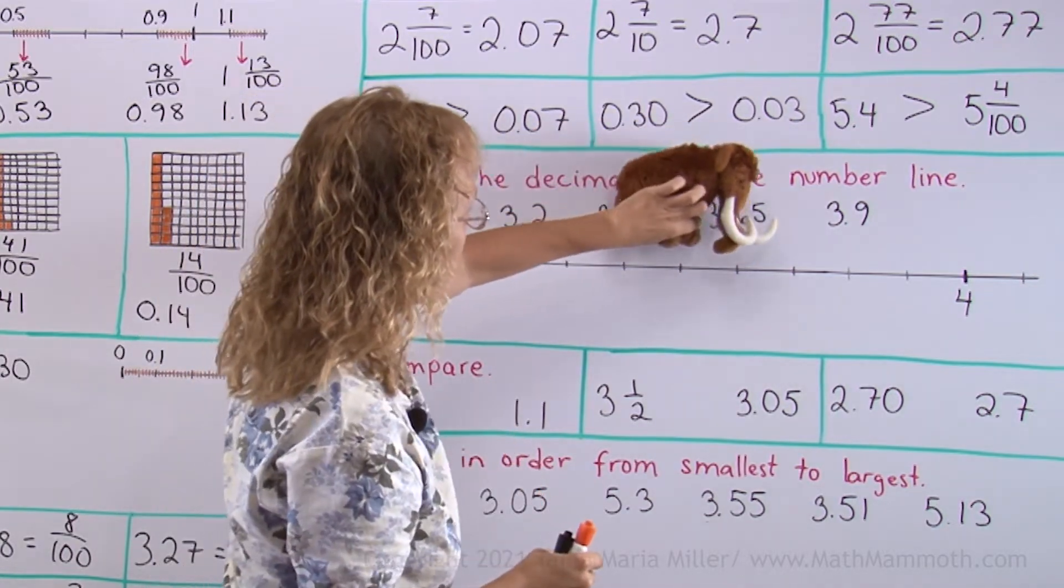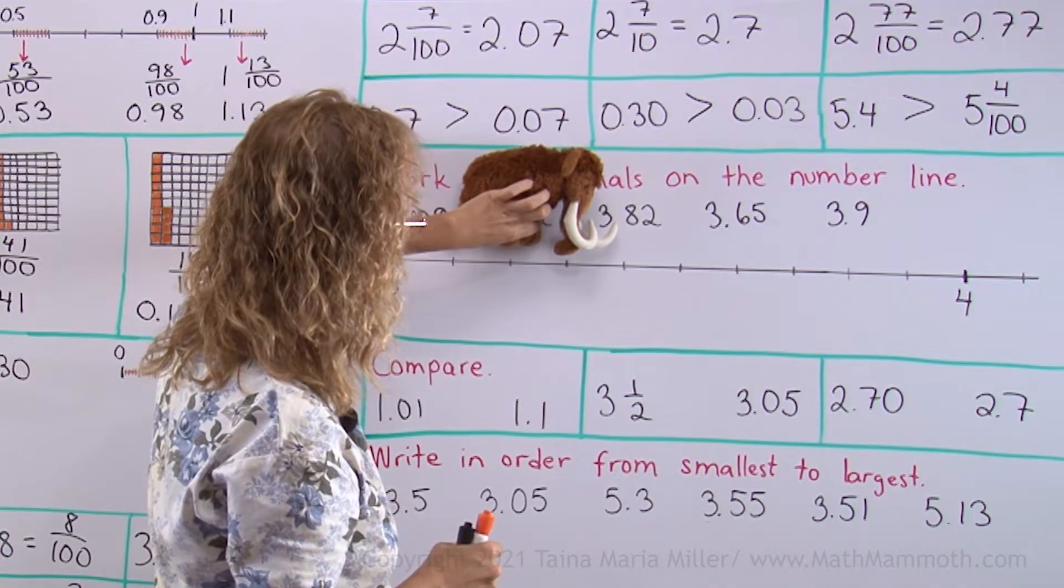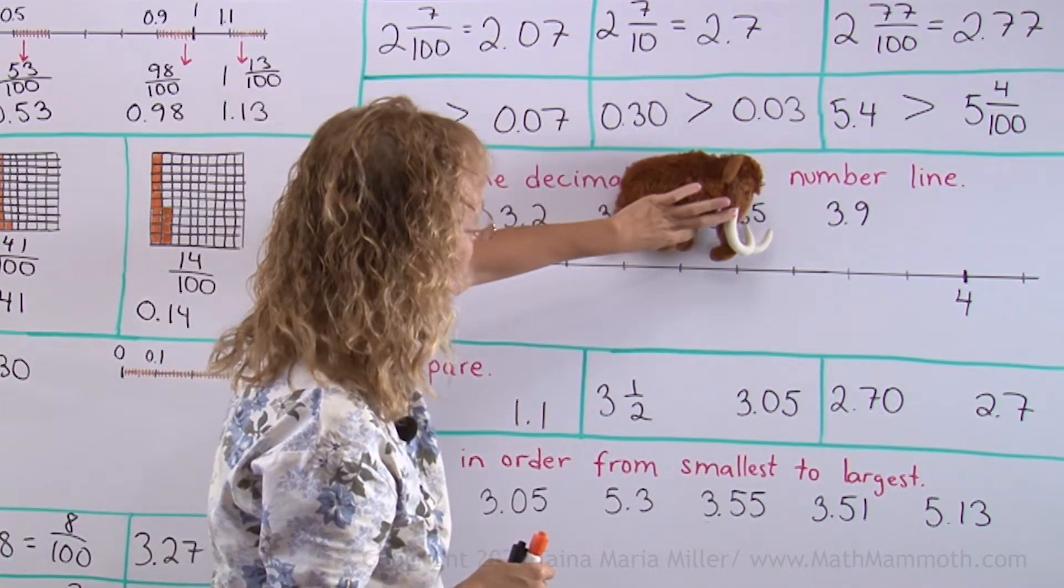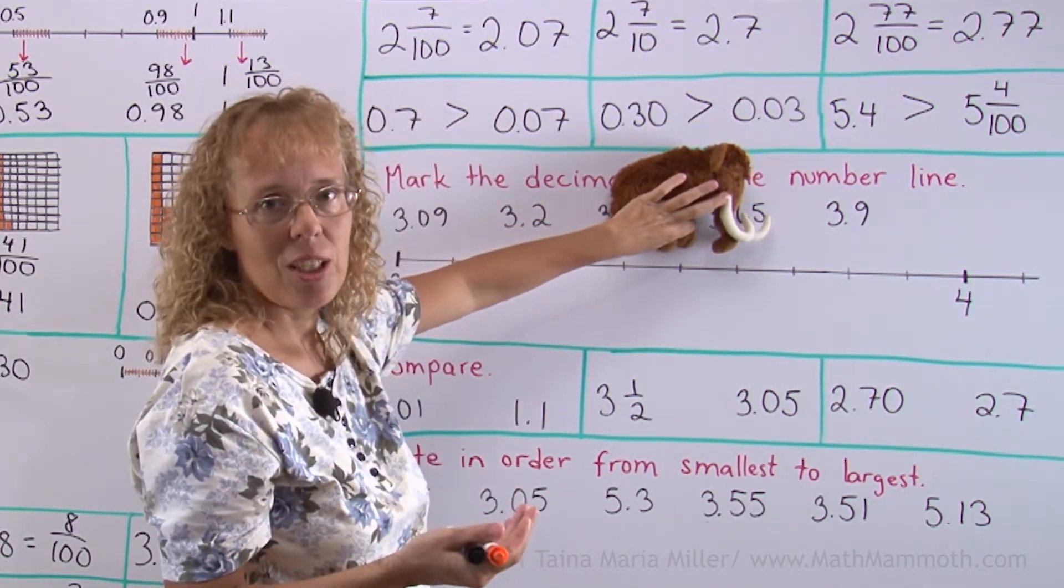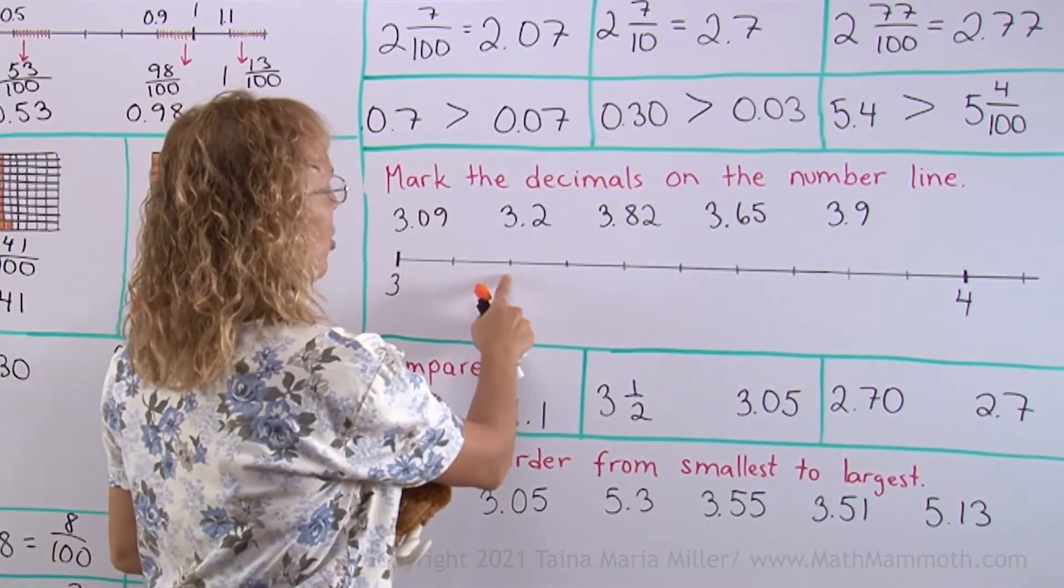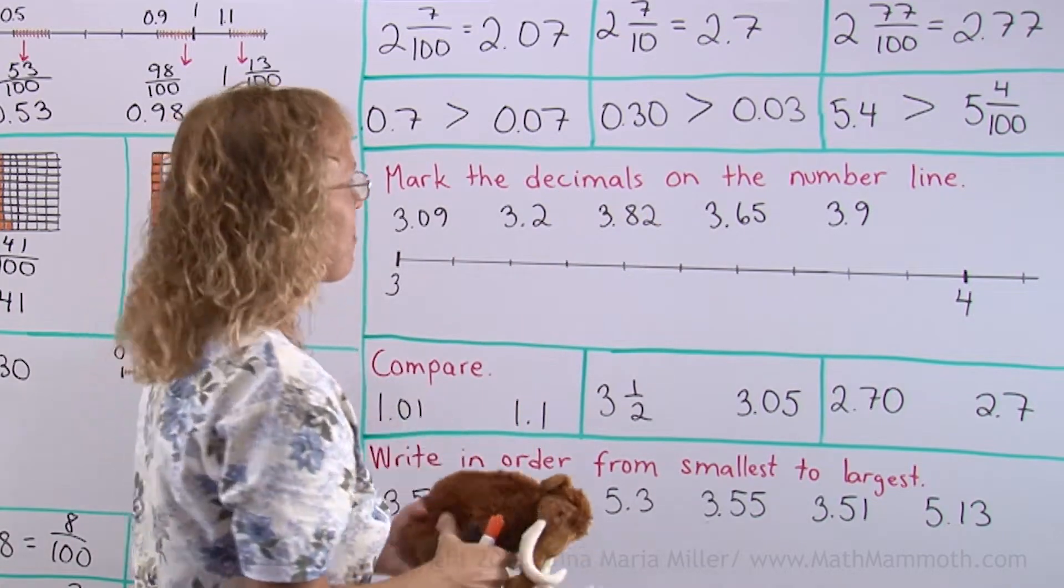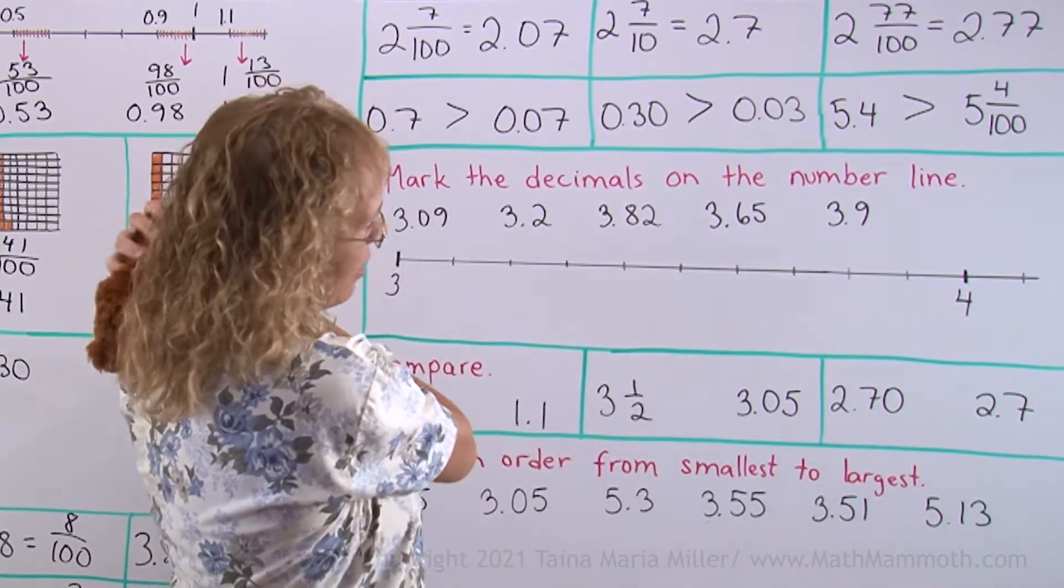Now Matthew jumps. How much did he jump? From 3 and 2 tenths to 3 and 5 tenths. So how much did he jump? He jumped 3 tenths. We could write an addition. 3.2 plus 3 tenths is 3.5. Okay, thank you Matthew. Enough jumping now.